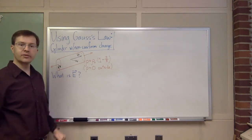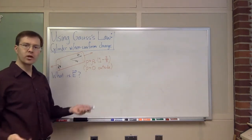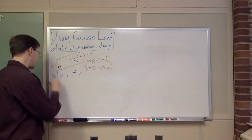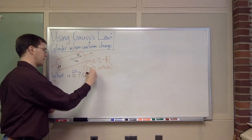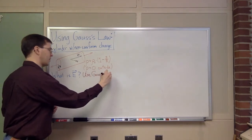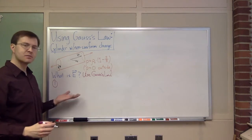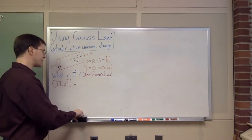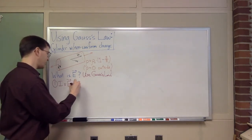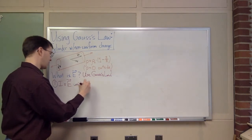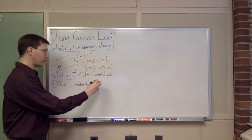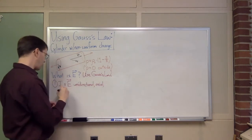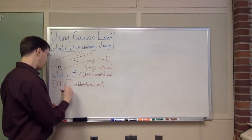I want to know what the electric field is in this situation. There's a five-step process that we use to do this. The first step in trying to use Gauss's law is to ask: is my field configuration one of my special fields? Is it unidirectional, or is it axial, or is it radial, or is it something else?